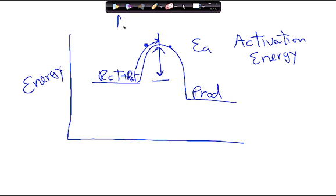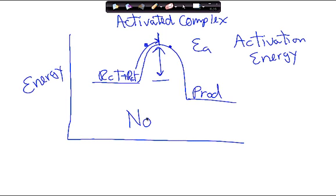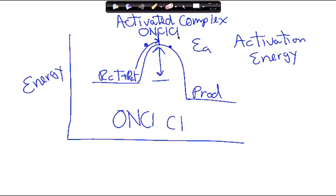What happens if it makes it over? It's spontaneous from there and goes directly to products. The top of this peak has a name — it is what is called an activated complex. For example, if we looked at our NOCl molecule — it's really bonded N in the middle — and imagine that this collided with chlorine. Our reactants are NOCl and Cl, and our activated complex would be O-N-Cl-Cl: the Cls are stuck together. That would be our activated complex.